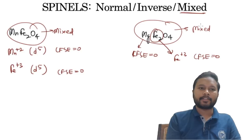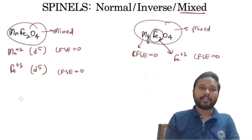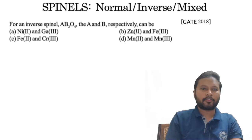To summarize the identification rule: calculate CFSE in the octahedral field for both cations. If the tripositive ion has more CFSE in the octahedral field, it's a normal spinel. If the dipositive ion has more CFSE in the octahedral field, it's an inverse spinel. Now let's go to previous exam questions.